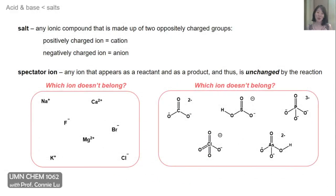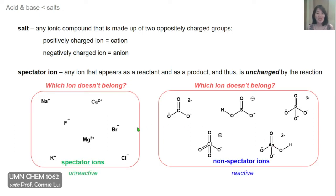As a quick preview of today's lecture, I have these two groups of ions, and in each of these groups, one member doesn't belong. On the left, I have simple ions consisting of a single atom — the monatomic ions. On the right, I have polyatomic ions of various charges. Most of the ones on the left can be classified as spectator ions, and the ones on the right mostly fall into the category of being non-spectator ions, meaning they are reactive in performing acid-base chemistry.